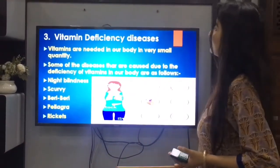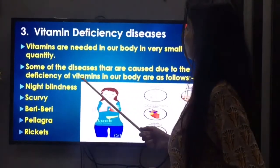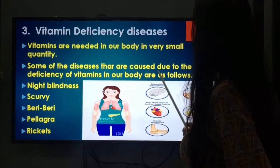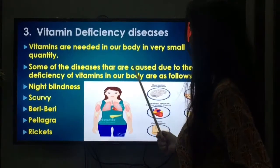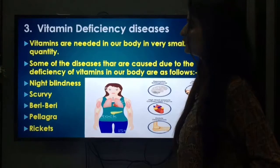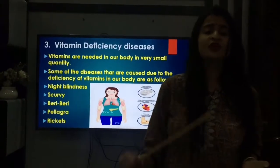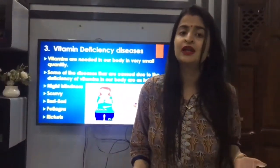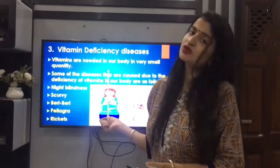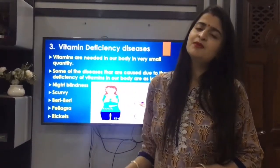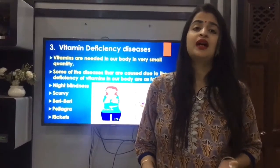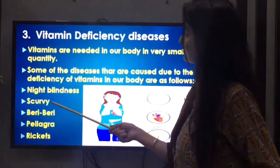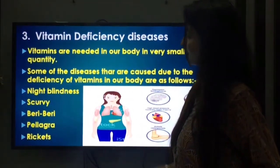Moving on to the next type: vitamin deficiency diseases. Vitamins are needed in our body in very small quantities. Some diseases caused due to deficiency of vitamins in our body are: Night blindness, Scurvy, Beriberi, Pellagra, and Rickets.